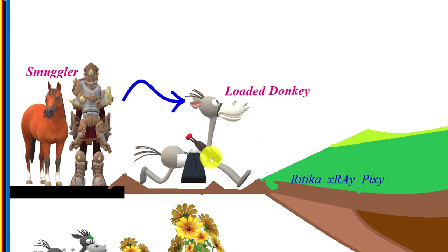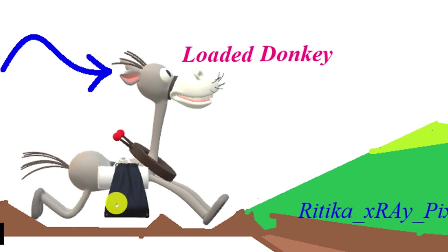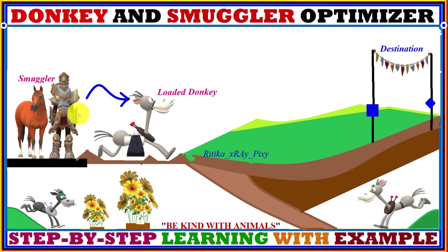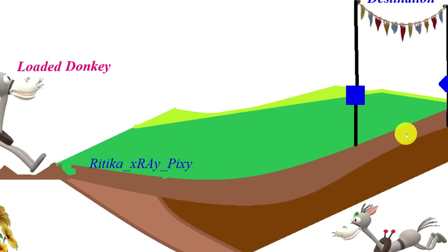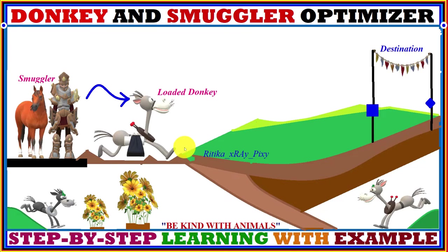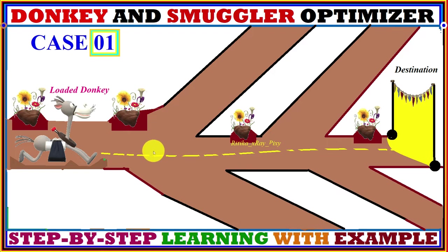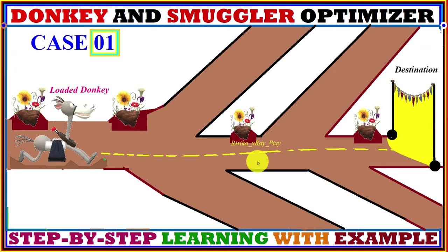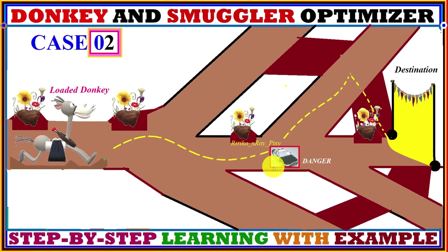First, the smuggler loads the donkey with their smuggling products. The loaded donkey is then released by the smuggler to reach the destination. In the first case, when there is no obstacle between source and destination, the donkey can take the shortest route and easily move from source to destination.